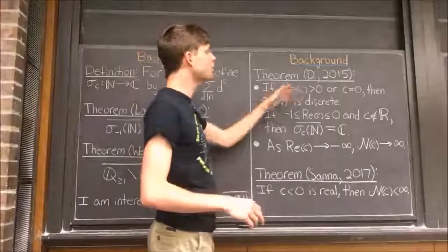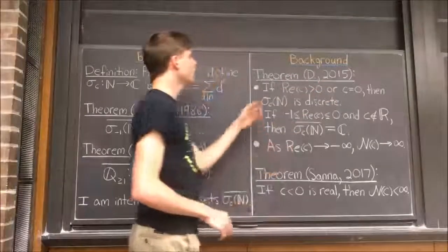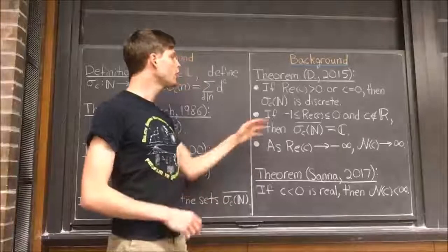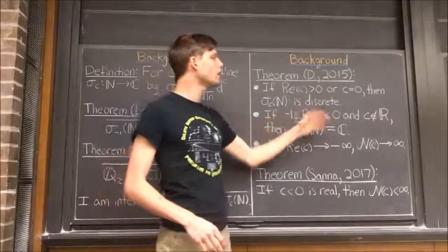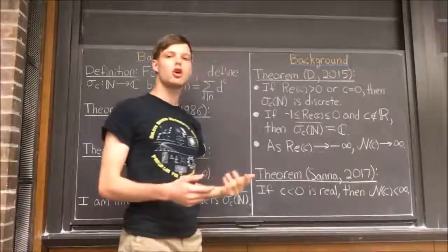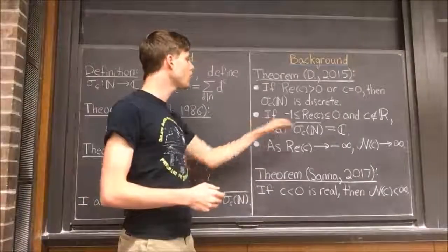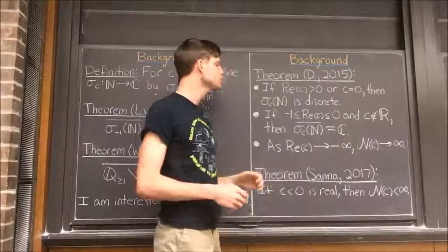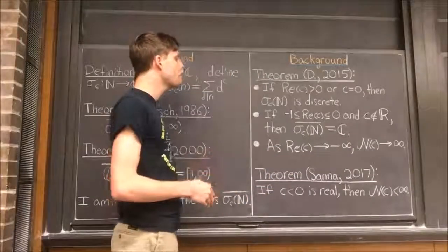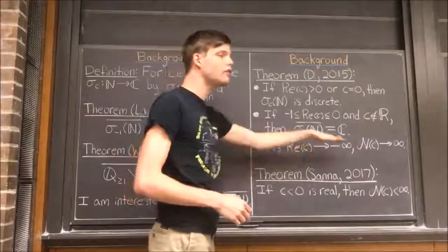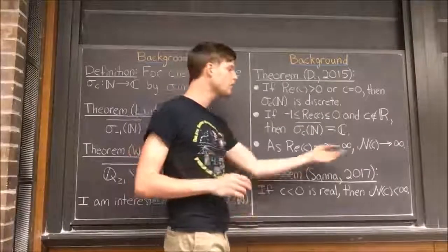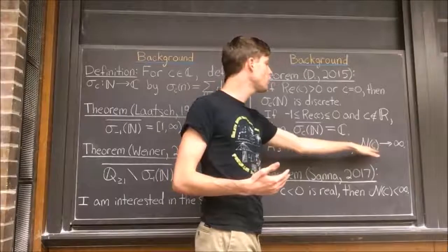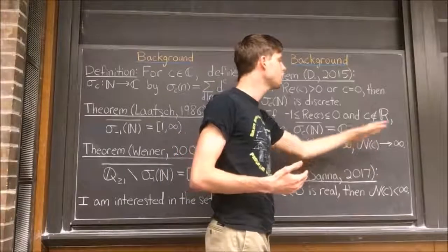If the real part of c is positive, or if c equals 0, then the range of σ_c is a discrete set. Also, if the real part of c is between -1 and 0, and c is not a real number, then I showed in a previous paper that the range of σ_c is actually dense in the entire complex plane. I also showed in the same paper that as the real part of c tends to negative infinity, the number of connected components of the closure of the range of σ_c, which I've denoted here by n(c), tends to infinity.